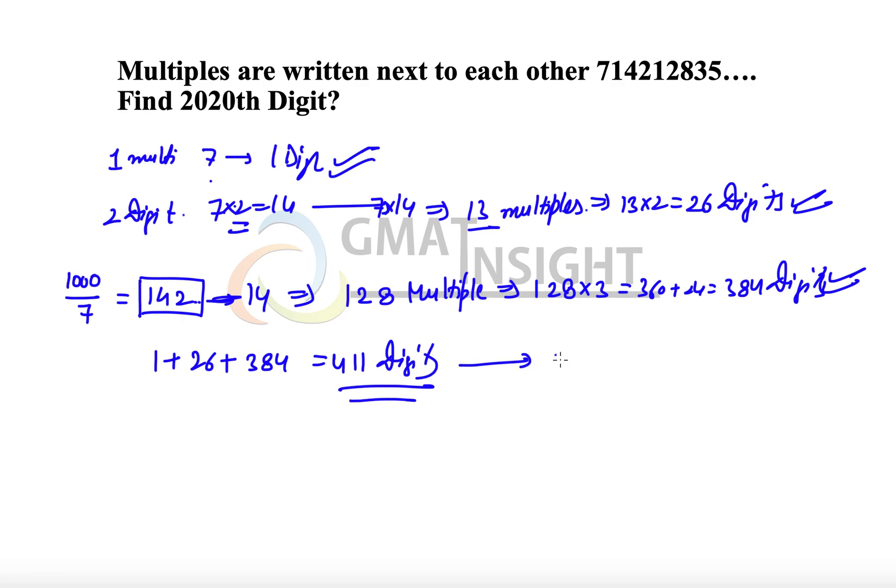Now we have to reach to 2020th digit. That means how many more digits do we need? 2020 minus 411 basically gives us 1609, so we have to just count 1609 more digits, and they will all be in the multiples of 7 which are running into the 4 digits.